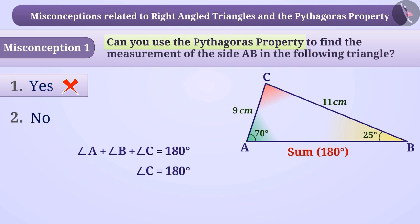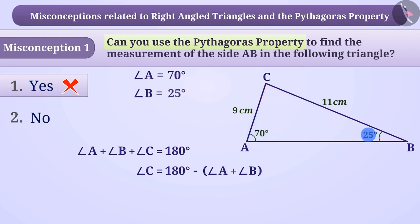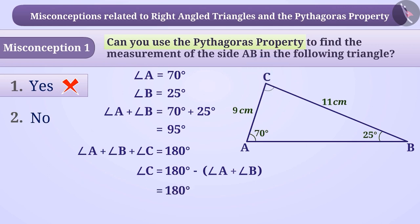Angle C is equal to 180 degrees minus (angle A plus angle B). In triangle ABC, angle A is equal to 70 degrees and angle B is equal to 25 degrees. The sum of both angles A and B is 70 degrees plus 25 degrees, which is equal to 95 degrees. Therefore, the measurement of the third angle is 180 degrees minus 95 degrees, which is equal to 85 degrees.